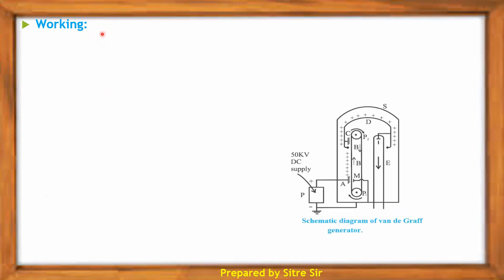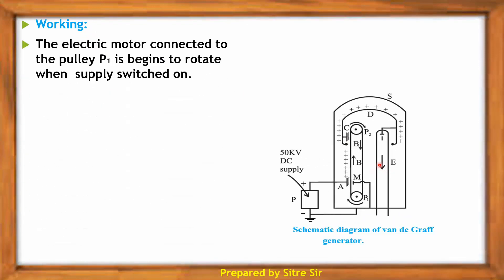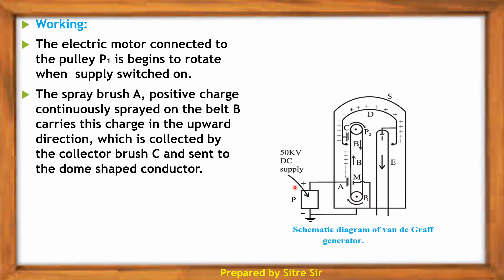Now the working of the Van de Graaff generator. The electric motor connected to pulley P1 begins to rotate when the supply is switched on. The spray brush A sprays positive charge continuously onto belt B, which carries this charge in the upward direction. The charge is collected by collector brush C and sent to the dome-shaped conductor.